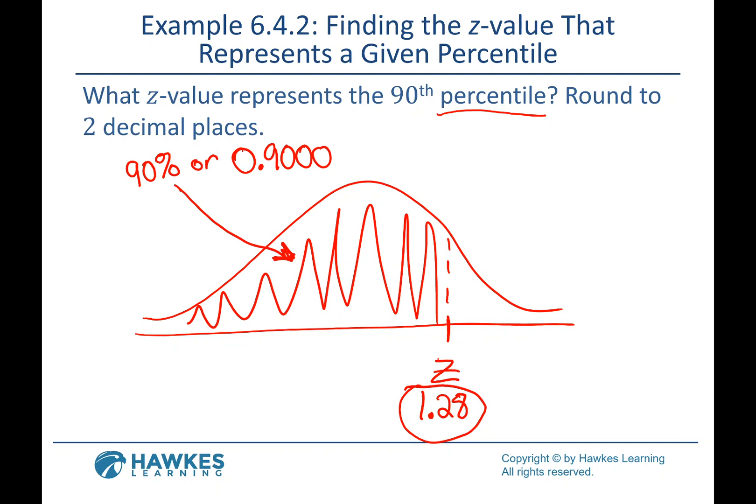So both of those were area to the left. We had two situations: if the value is in the table exactly, that's the z-value; if it's not in there exactly, just get as close as you can get.